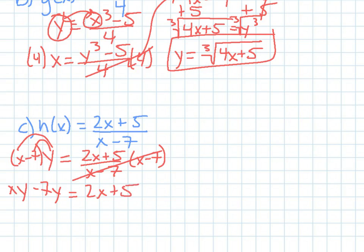Now I want to get my x's on the same side so I have it solved for x. So I'm going to move 2x over. And I'm going to add the 7y back over so I can get it by itself. So now you have xy minus 2x equals 7y plus 5.